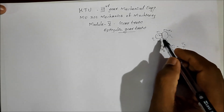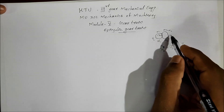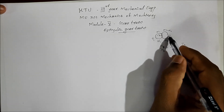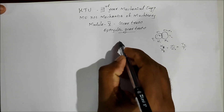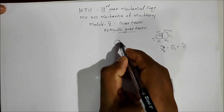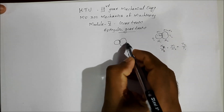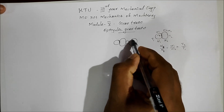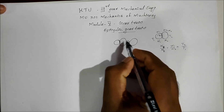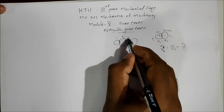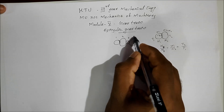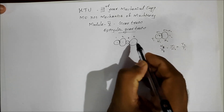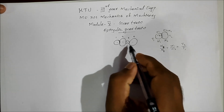This arrangement is known as a simple gear train. If you consider two or more gears — a first gear, second gear, third gear, fourth gear — arranged in series with a single shaft, this type of gear train is called a simple gear train.